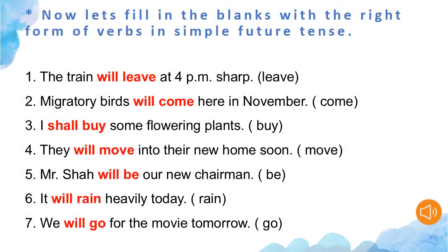Now that we have seen the rules, let's do one exercise based on simple future tense. The first sentence is: the train ___ at 4 pm sharp. The right form of leave is will leave. The second sentence is: migratory birds ___ here in November. The right form of come in future tense is will come. Next: I ___ some flowering plants. The right form of buy in future tense is shall buy. We can also write will buy — that is also correct. Next sentence: they ___ into their new home soon. The right form of move is will move.